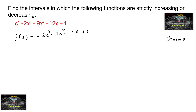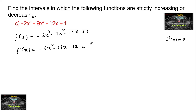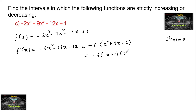At the point where f'(x) = 0, the graph changes behavior. Let's differentiate: f'(x) = -6x² - 18x - 12. We can take out -6 as a common factor, giving us -6(x² + 3x + 2). We can factorize x² + 3x + 2 as (x + 1)(x + 2).